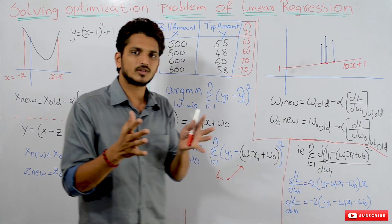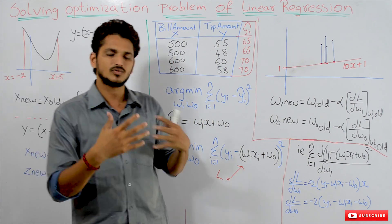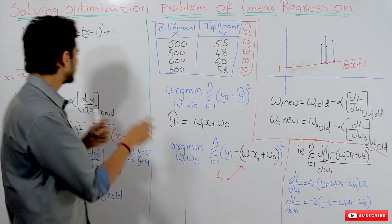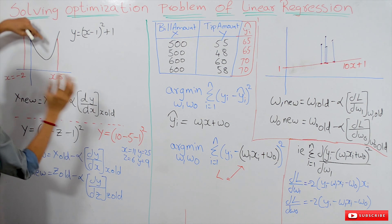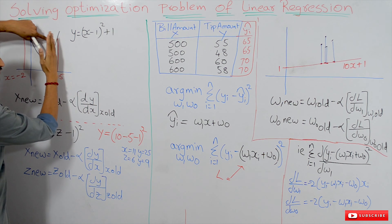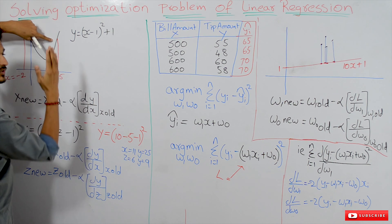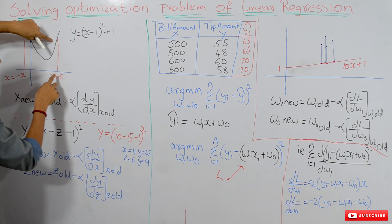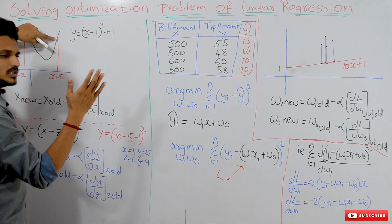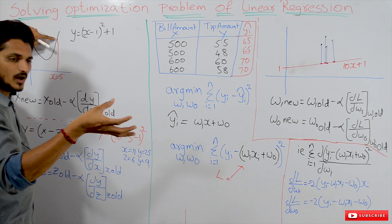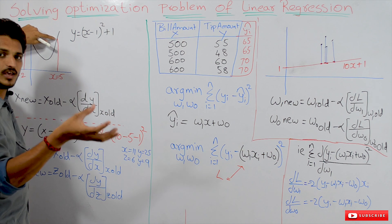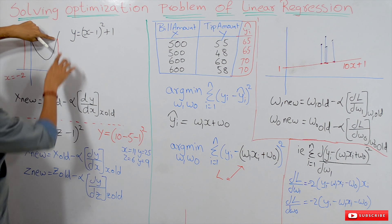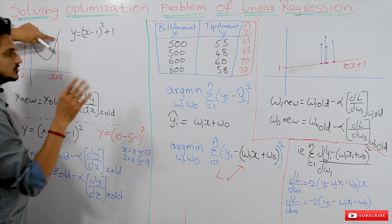In gradient descent, we don't know the x value, so we randomly select some x value — let's say x is equal to 5. At x equals 5, we find the derivative of this function. Derivative means it will identify the slope, which is the change in y by change in x. At x equals 5, the slope is positive.